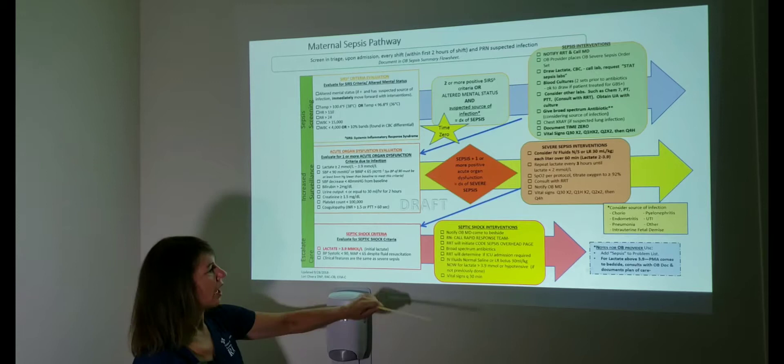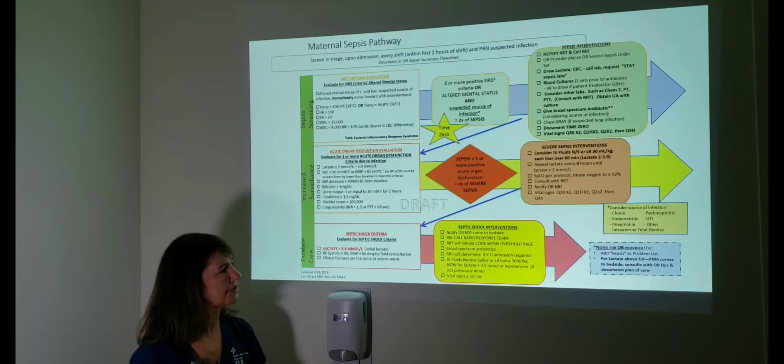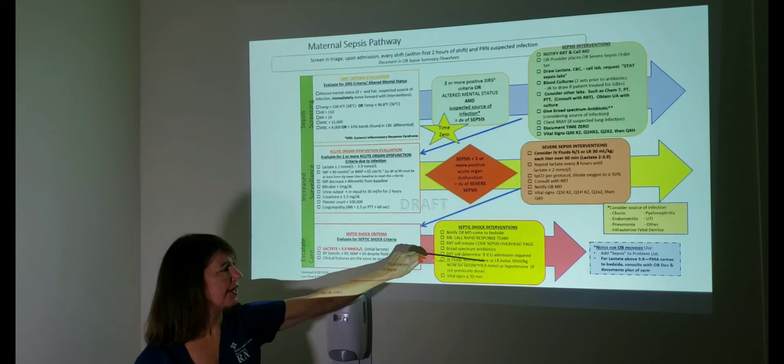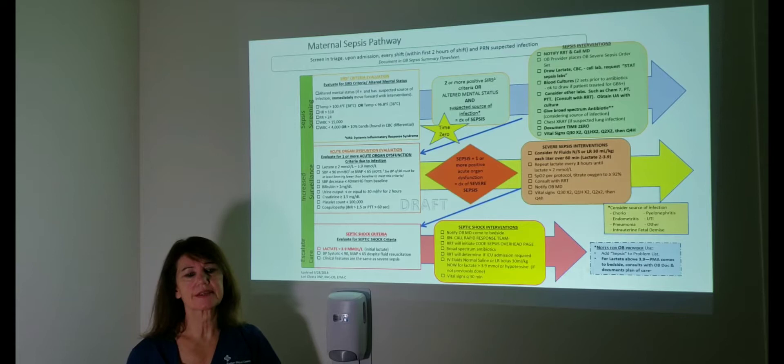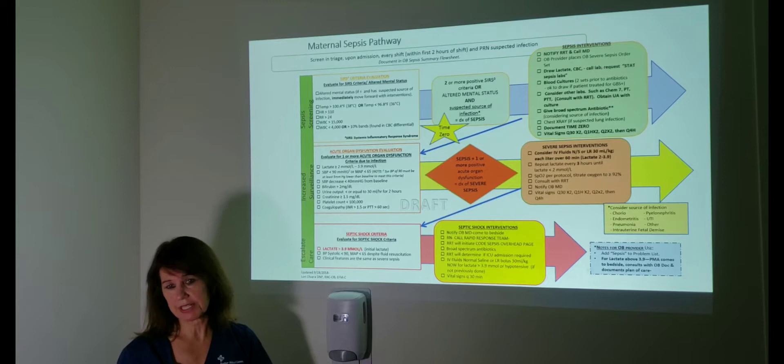Fluids—we're giving a 30 mLs per kg fluid bolus and we're doing the vital signs every 30 minutes. So this is a very important step to help everybody at the bedside making a plan to care for the patient. If the patient is still hypotensive despite giving your fluid bolus, your 30 mLs per kg, you may want to consider ICU because vasopressors are going to be needed. So anyways, that's the pathway.